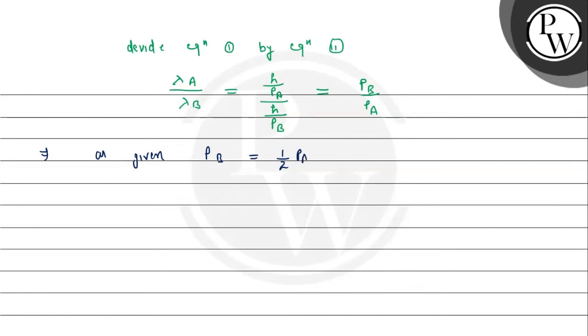Half of momentum of A. This is given in the question that B's momentum is half of A's momentum, so we'll call this equation number 3.